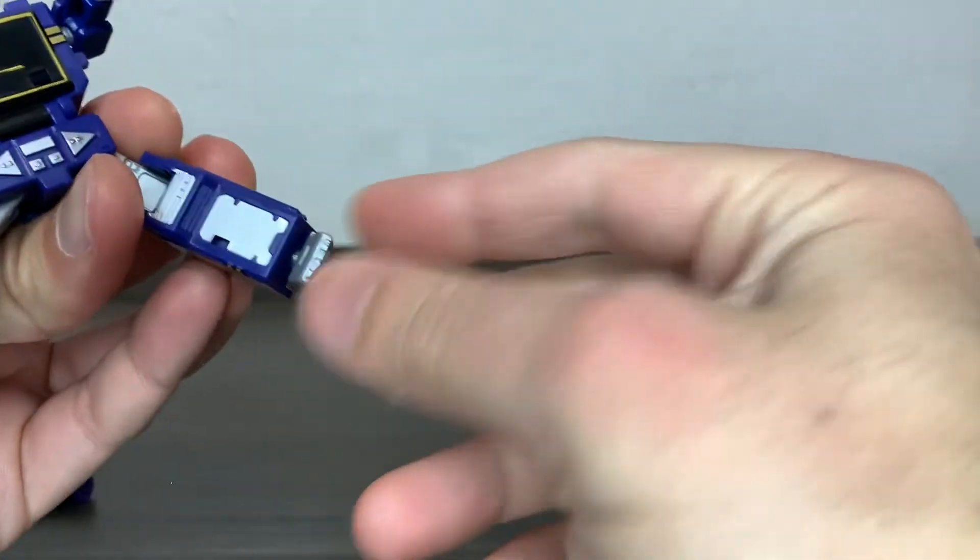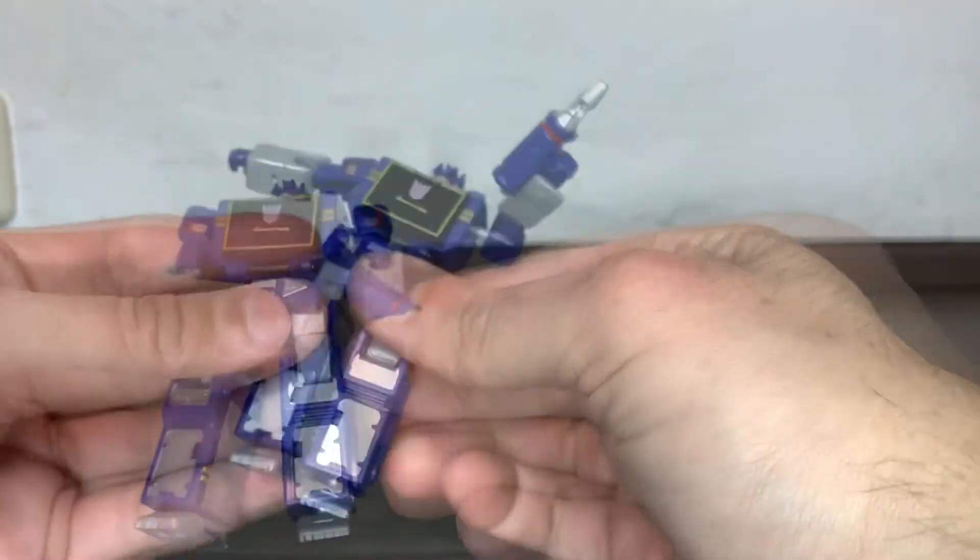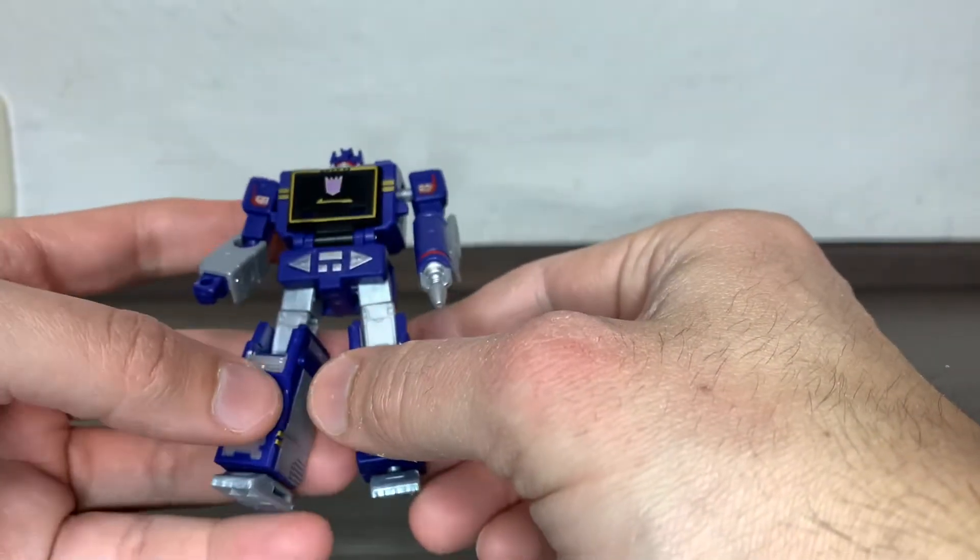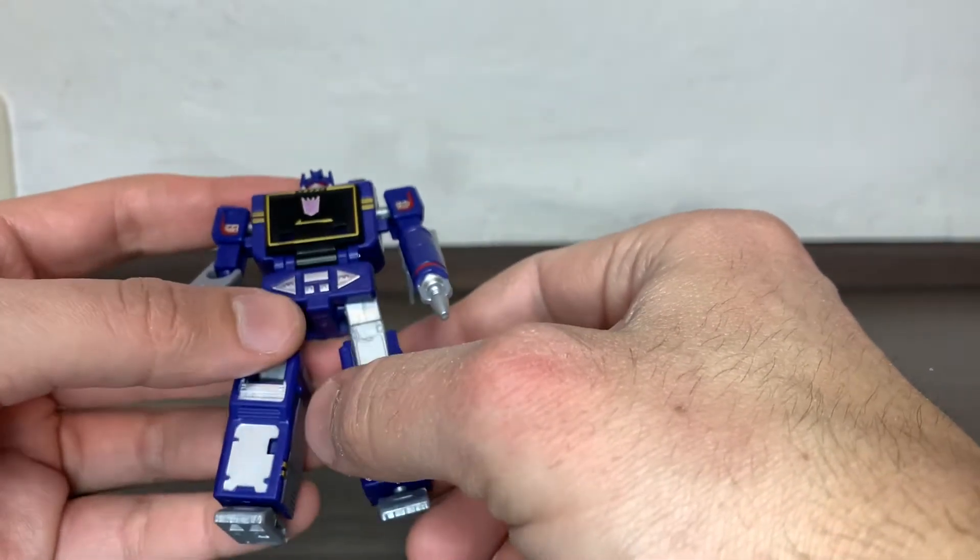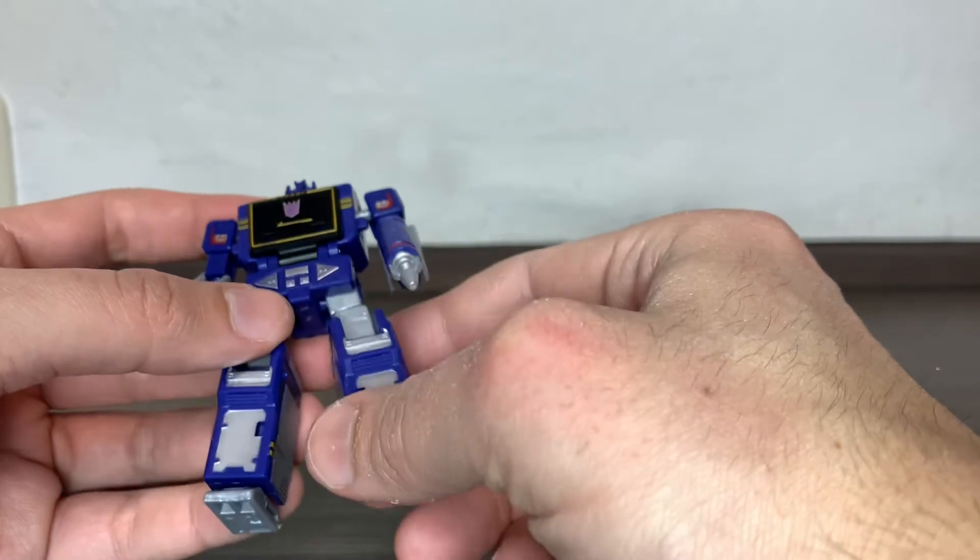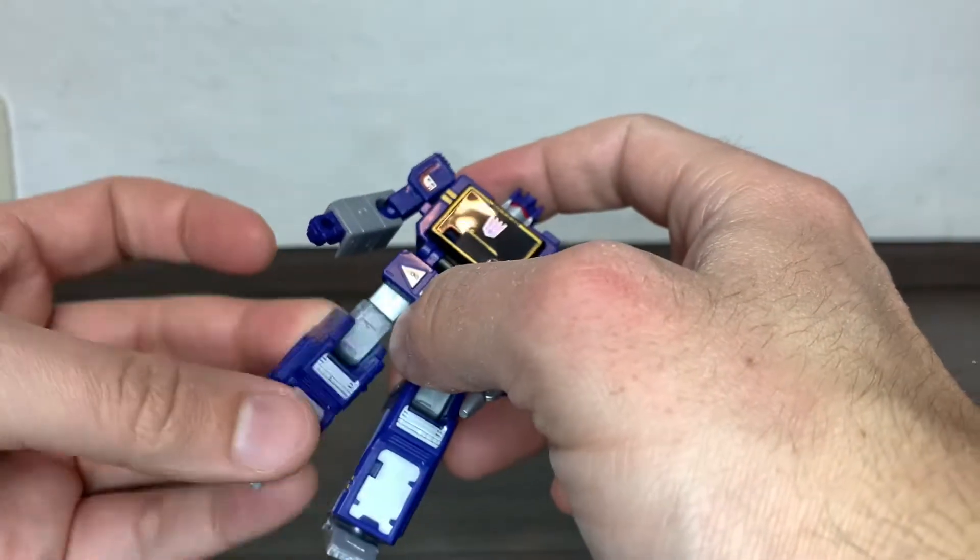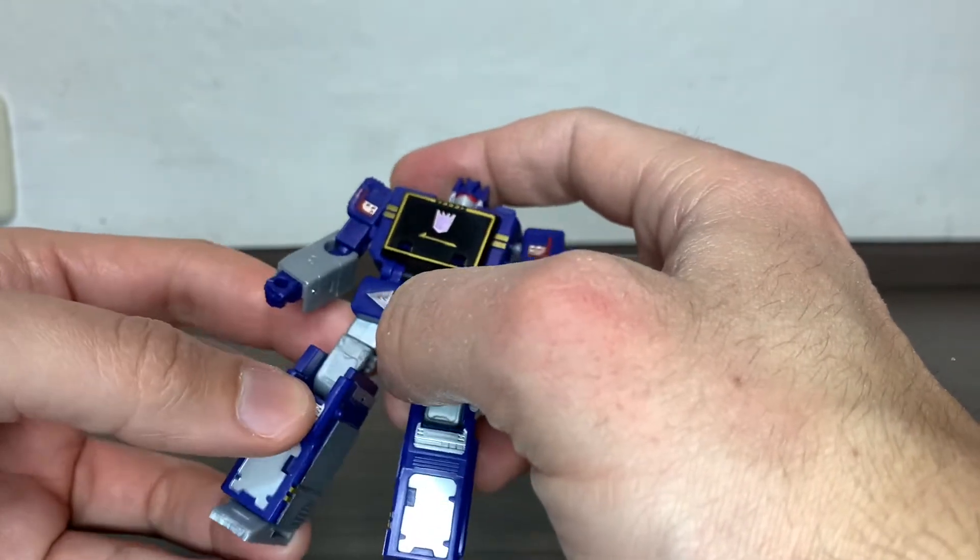I'm almost sure he's maybe the one with the most articulation from all the core class, maybe not counting Rattrap. He has this thigh cut, which I think he's the only one who has it. I have to check when I bring the others for comparison.